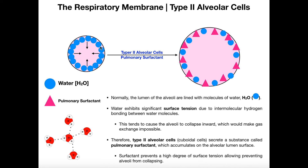So what's going to happen? They're not going to have that surfactant, and most likely the water molecules — that moisture inside the alveolus — will cause their alveoli to collapse, and they won't be able to breathe or exchange gases. There are two solutions: one is to put the infant on a ventilator, which essentially breathes for them; the other is to give injections of pulmonary surfactant. You have to have that because if there's no pulmonary surfactant, the alveoli are going to be collapsed and they won't be able to breathe.